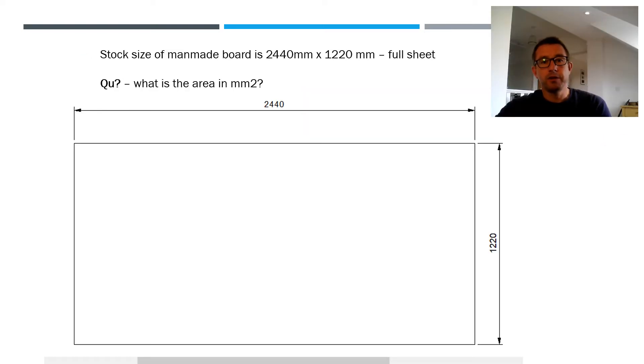So we also consider stock size materials when we're working in technology. And you can see that a stock size of man-made board is actually 2440 millimeters by 1220 millimeters, 2.44 meters wide by 1.22 meters tall. So the first little bit of maths for you to start thinking about is what is that area in millimeters square for a full sheet of material? See if you can work that one out.